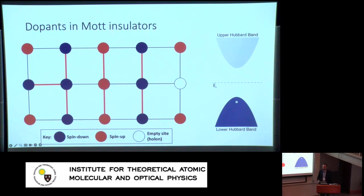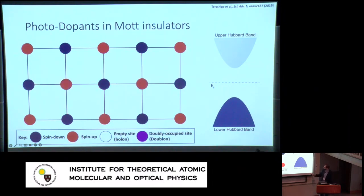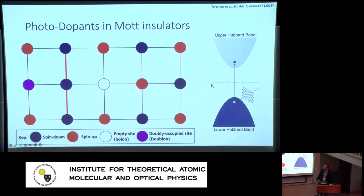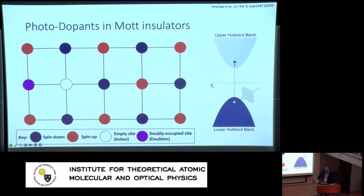In a photodoped system, you're creating an excitation from the lower Hubbard band to the upper Hubbard band — simultaneously creating an empty site (a holon) and a doubly occupied site (a doublon). Now consider the motion of these two carriers. If the empty site hops, it creates spin-flips and a string of magnetic excitations grows. But the doubly occupied site can follow in its path, returning the displaced spin-down electron to an energetically favorable spot. The motion of one carrier repairs the destruction to the spin sector created by the other carrier.